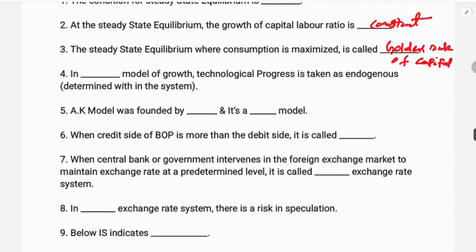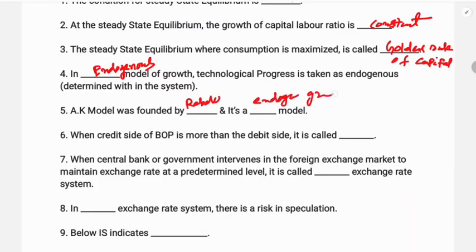The fourth question: in this model of growth, technological progress is taken as endogenous — that is, determined within the system. That is the endogenous growth model. The fifth question: the AK model was founded by Rebelo, and it is an endogenous growth model.